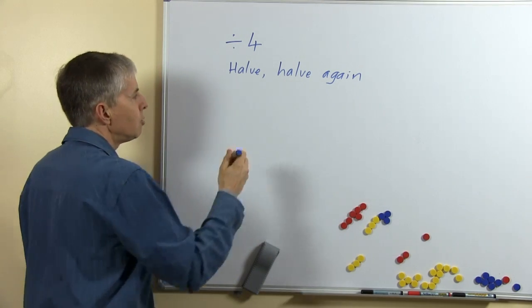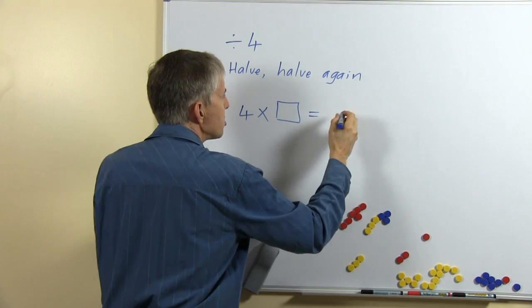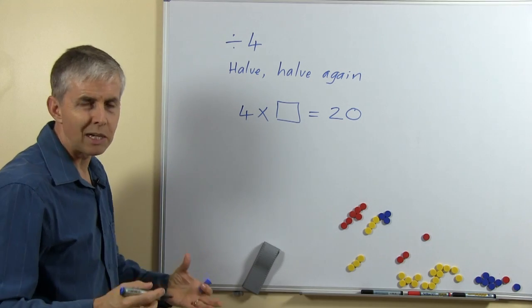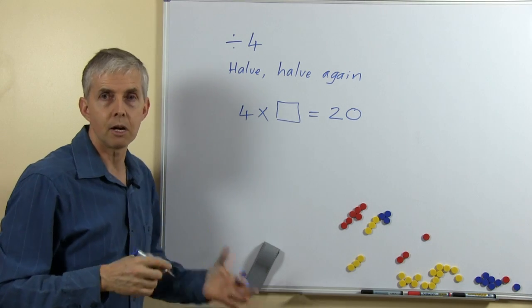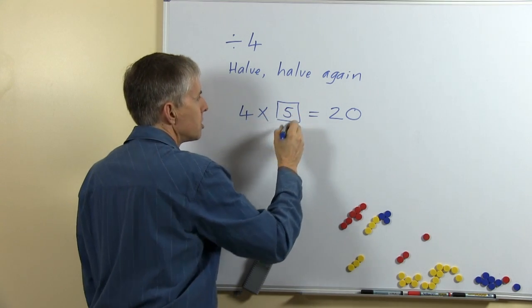An alternative strategy which works well is to say 4 times what equals the number we're dividing. So we might say 4 times what equals 20, think of your 4 times number facts, what's the number that belongs in there? Of course it's 5.